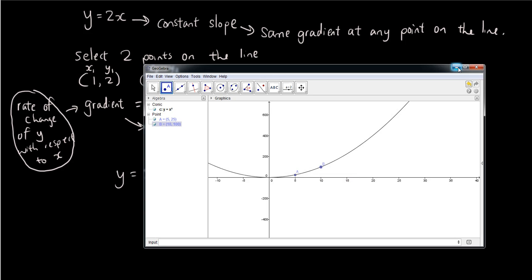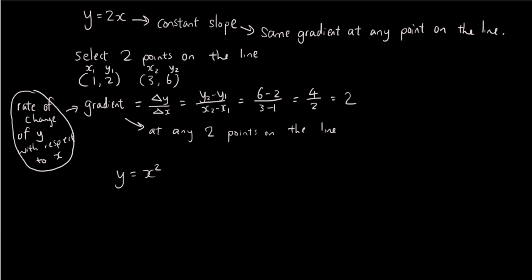When x is equal to 10, y is equal to 100. Now these two points on this line, if we use that as our x2 y2 and x1 y1, so we're going to select two points. So x1 is 5, y1 is 25, that's our first point. X2 is what do we say 10, y2 is 100.